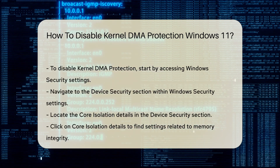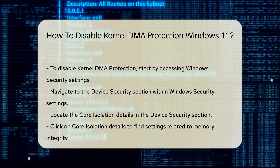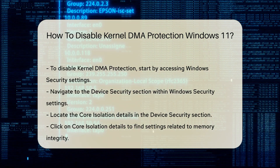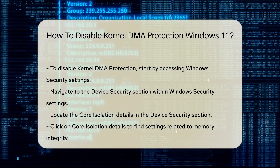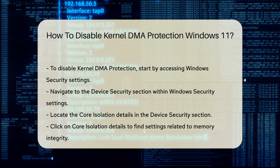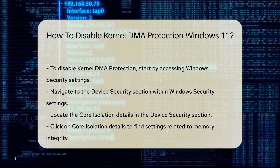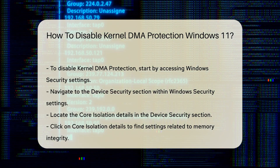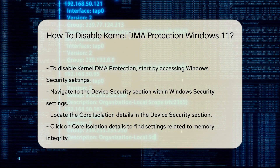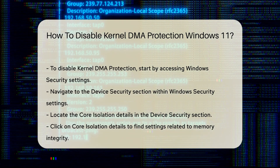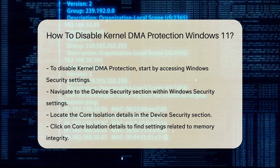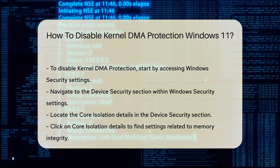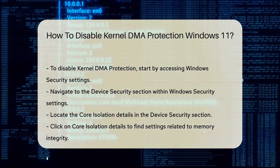To disable Kernel DMA Protection, start by accessing the Windows Security Settings. Navigate to the Device Security section. Here you will find the Core Isolation Details. Click on Core Isolation Details to access the settings related to memory integrity. You will see an option for Kernel DMA Protection. To disable it, simply toggle the switch to the off position.